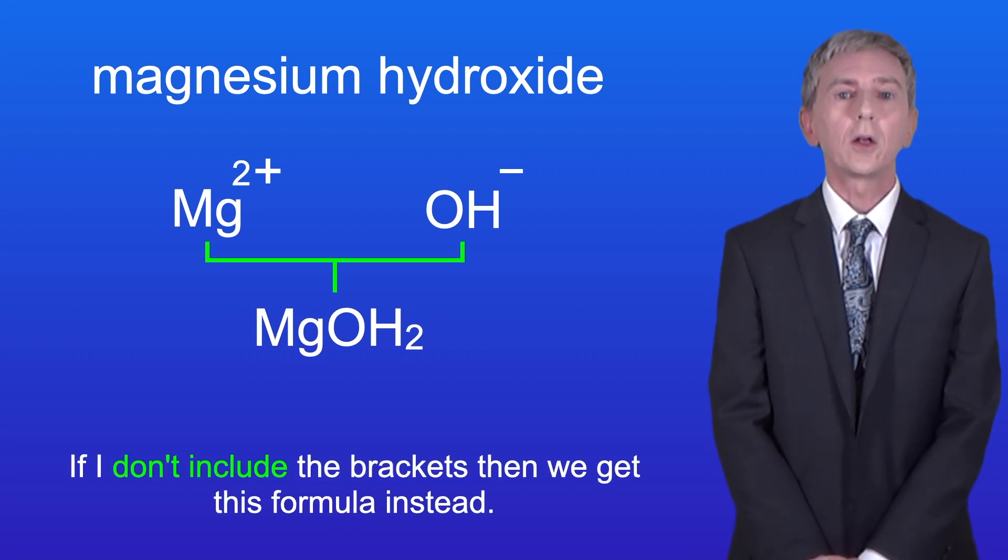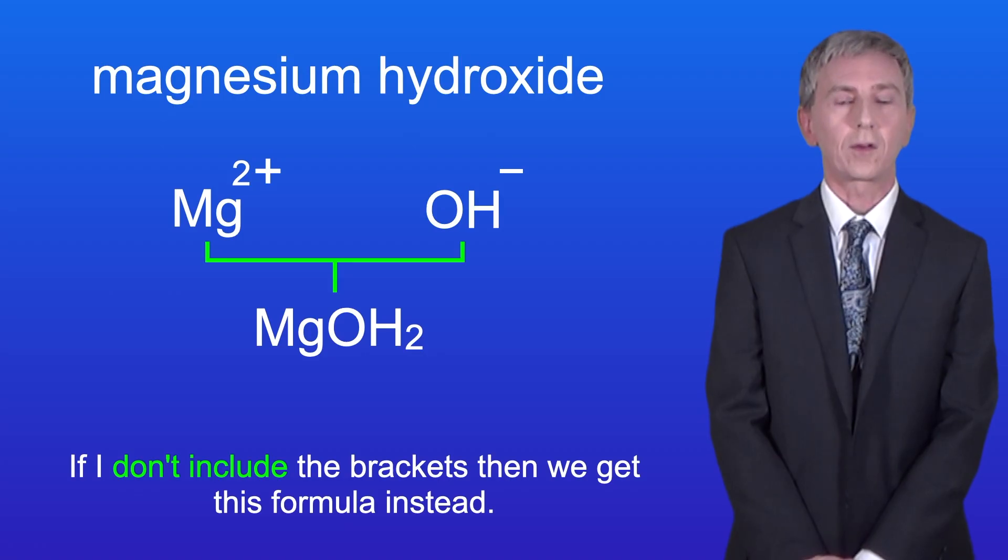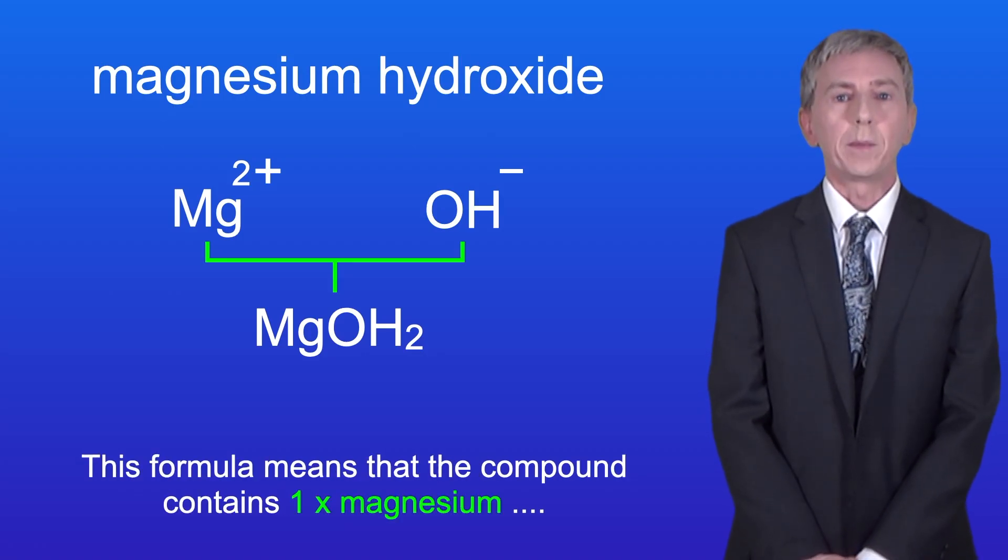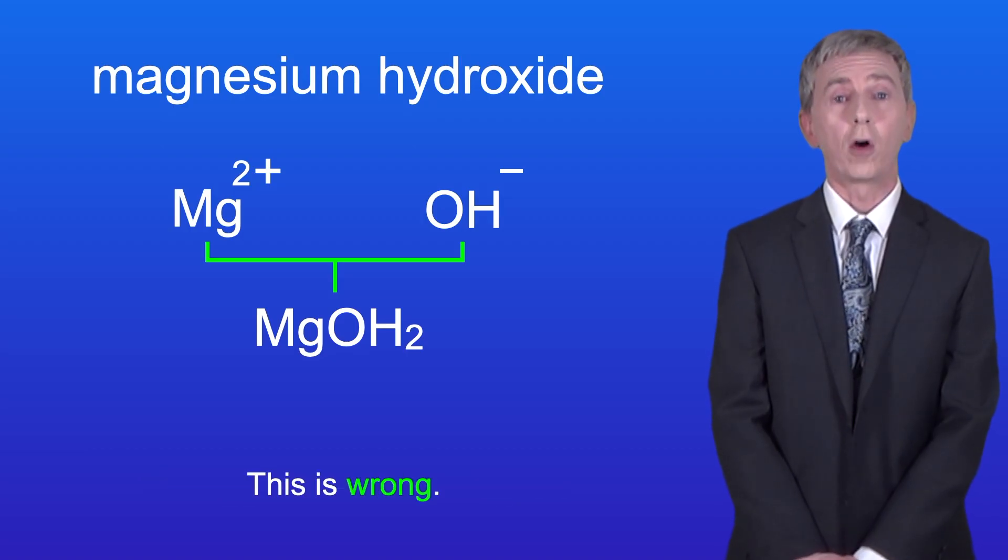Now if I don't include the brackets then we get this formula instead. This formula means that the compound contains one magnesium, one oxygen and two hydrogens and this is wrong.